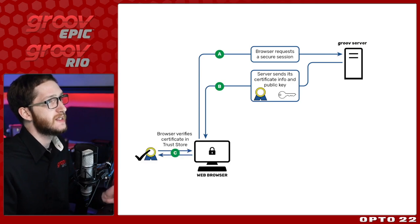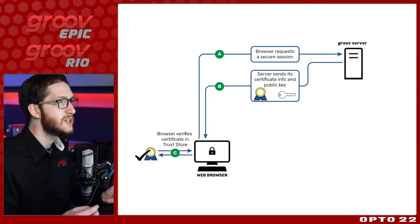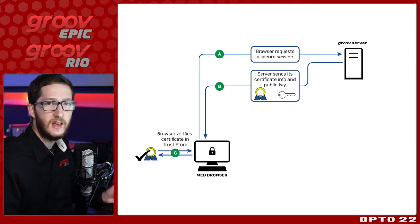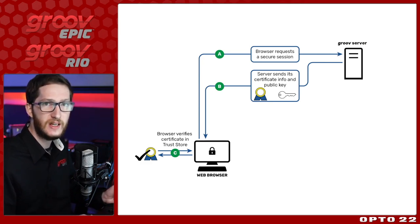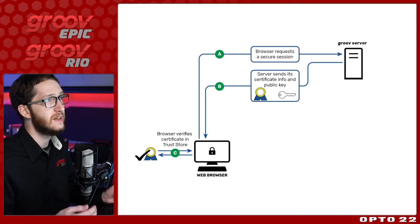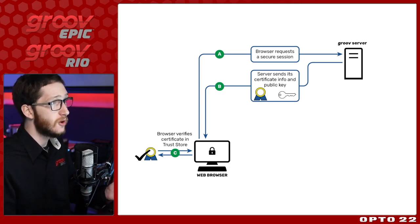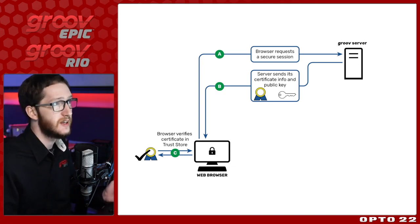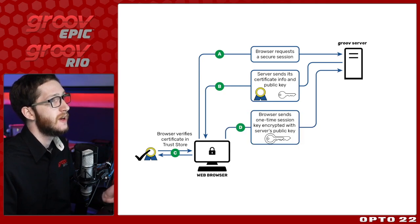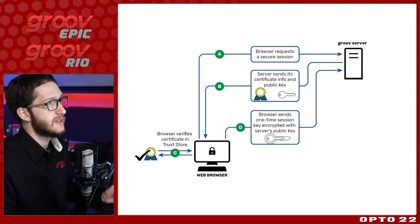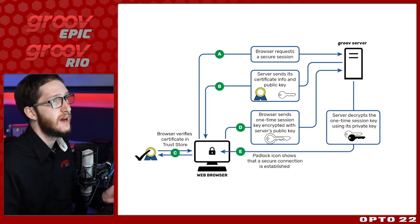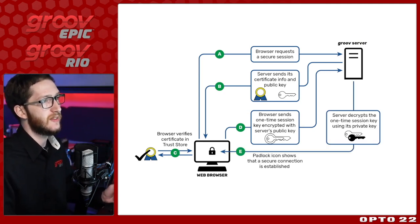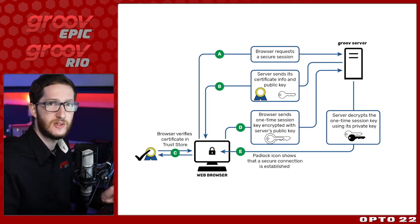Once the web browser gets that certificate back, it needs to make sure that it can trust it, and this is going to be exactly the same whether it's a private certificate authority, a public CA, or even a self-signed certificate. We can also view all of the certificates we have in our trusted store. Once it knows it can trust that server, it'll reach out and establish a one-time session, and we'll get that padlock and be able to communicate securely.